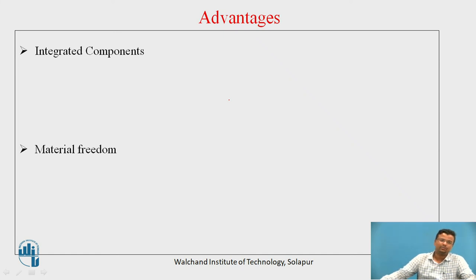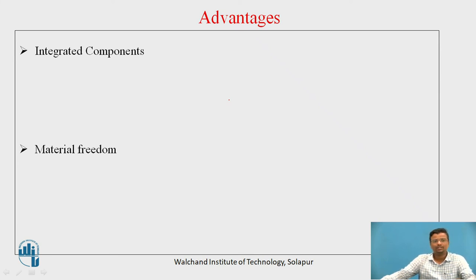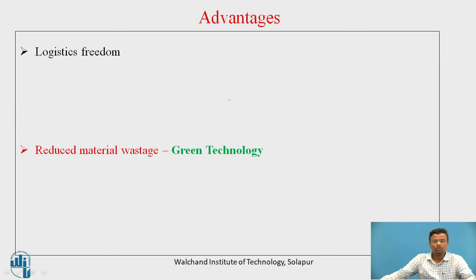In additive manufacturing, the component developed will be a single body — there will be no separate springs, nuts, or bolts in the end product. Different materials can be used, including thermoplastics, metals, non-metals, and even joining of two dissimilar metals. Importing the 3D model into the machine is simple, not complex. Additive manufacturing is also regarded as a green technology with reduced material wastage.